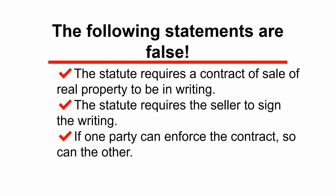Third, many people believe that if one party can enforce the contract, so can the other. That is sometimes called the idea of mutuality of remedy, but it's not correct. It's quite possible that one party might sign the writing and another party might not. So the party who signed can have the contract enforced against him or her, while the party who didn't sign cannot have the contract enforced against him or her.